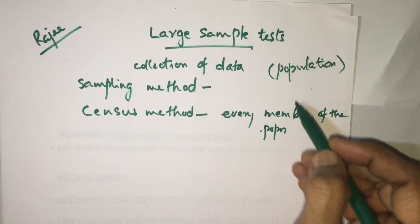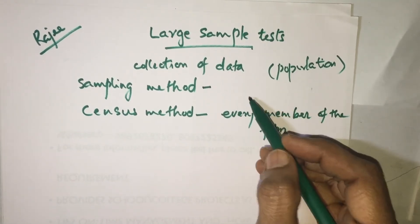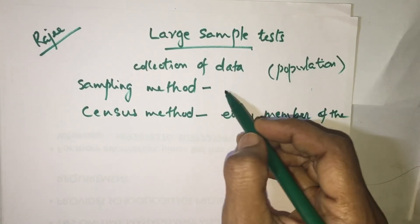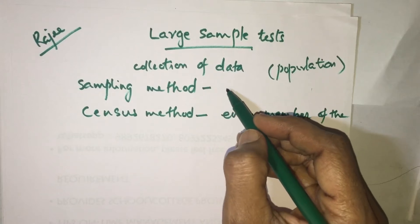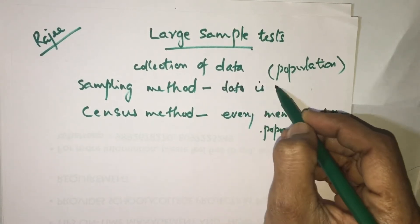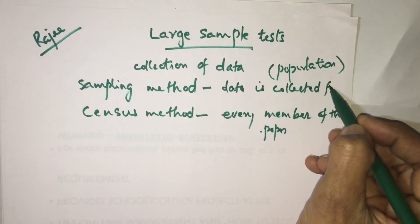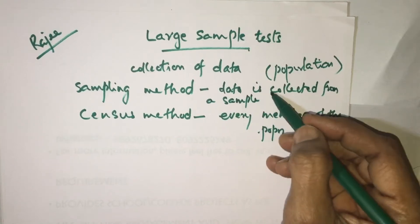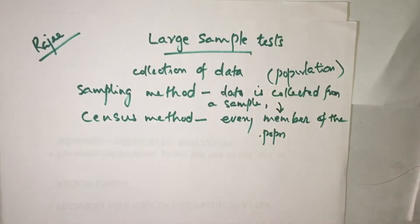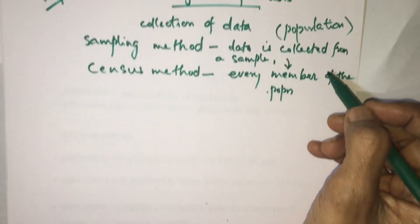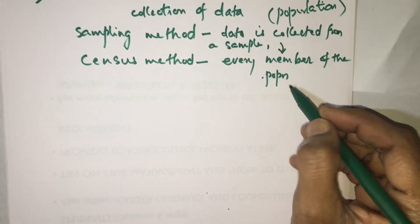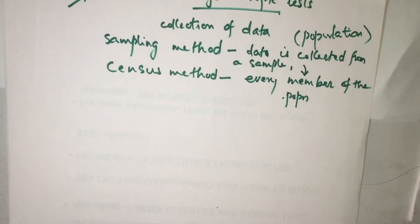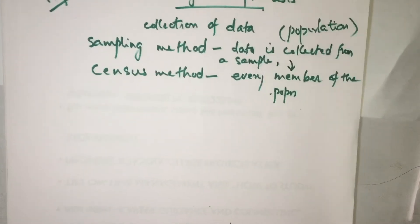From this population, I will take a small sample and study it — that is called the sampling method. Data is collected from a sample, which is a part of a population. Normally, we take 10% of the population as samples — that is the ideal way of taking a sample.